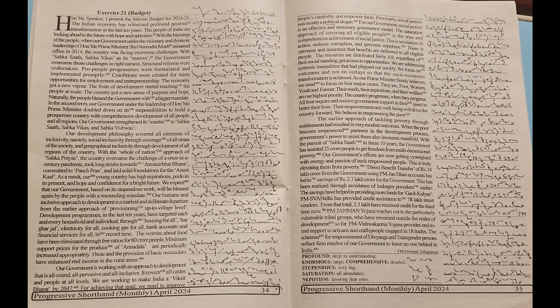It covers all castes and people at all levels. We are working to make India a Viksit Bharat by 2047. For achieving that goal, we need to improve people's capability and empower them. Previously, social justice was mostly a political slogan. For our government, social justice is an effective and necessary governance model. The saturation approach of covering all eligible people is the true and comprehensive achievement of social justice.